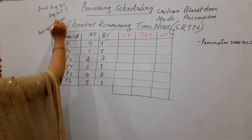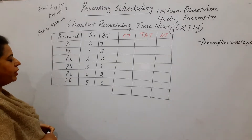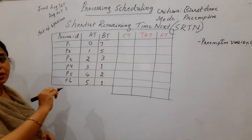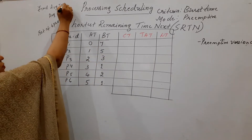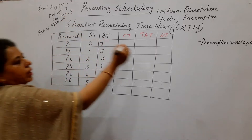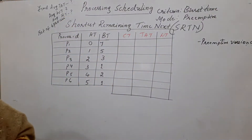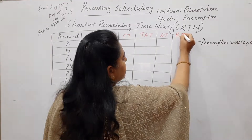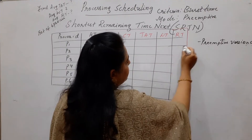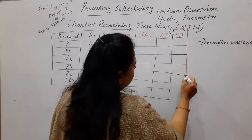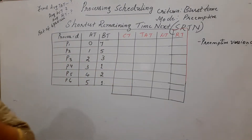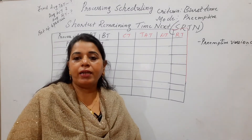A question will be asked in this manner. They will give you a set of 6 processes, P1 to P6, with the arrival time and burst time for each process. You are asked to find out the average waiting time, average turnaround time, and average response time. I will include a response time column as well, since questions may ask for it depending on the marks.